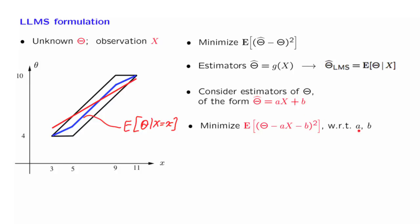We want to find choices for a and b. That is, we want to choose a particular red line so that the resulting estimation error, the resulting mean squared estimation error, is as small as possible. So what we have here is the random variable. Here is the value that's going to be given to us by our estimator. And we look at the associated error, square it, and take the expectation. So this is the linear least mean squares formulation.